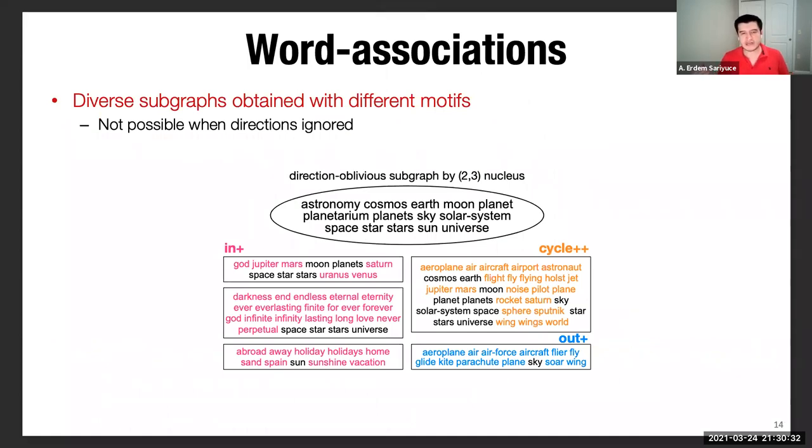Another comparison we did is with respect to directional oblivious methods, like the truss decomposition. For this, I chose this Edinburgh word association network. Basically, there is an edge from one node to another if that word reminds that other word. This subgraph, for instance, about space astronomy is obtained by the two-tree nucleus decomposition, or in other words, truss decomposition. If you look at each word here and look at the quarks by different motifs, we find different contexts.